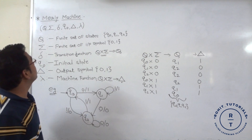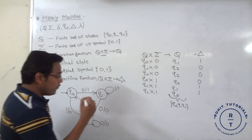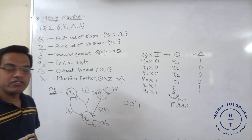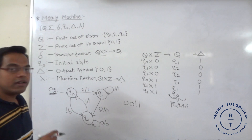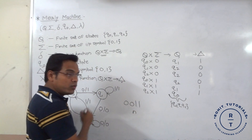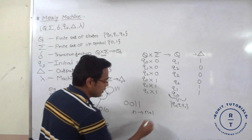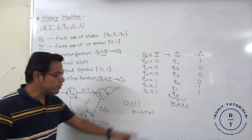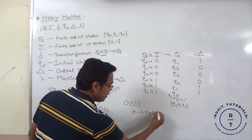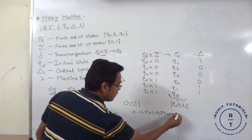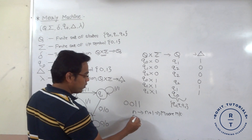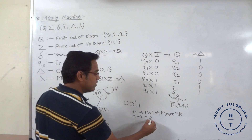So this is about the basic things of mille machine. Whenever we pass any string, suppose 0011, to this mille machine, what happens? As we know, when we consider the Mure machine, if we give an n-length string to the Mure machine, it gives you output of n plus 1 length. But when we consider the mille machine, whenever we provide an n-length string, it gives you output of n length.